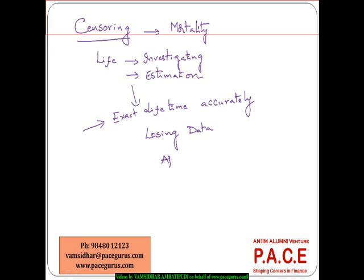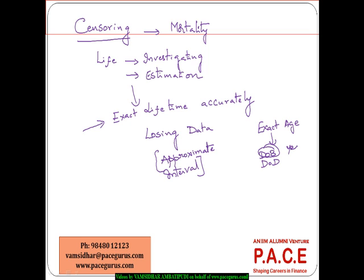Because of that loss of data, I am not able to compute the exact lifetime of the person or entity being investigated. I will only know some approximate value or some interval value, but not the exact value. For example, if my intention is to find out the exact age of a person, I need both the date of birth and the date of death. If I have only the year of birth instead of the date of birth, the age is only an approximation. Similarly, if I am not sure of the date of death, the age will be only an approximate age.